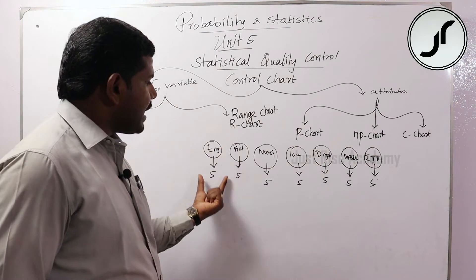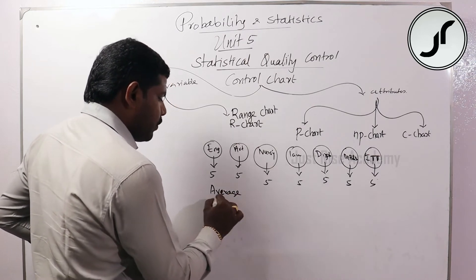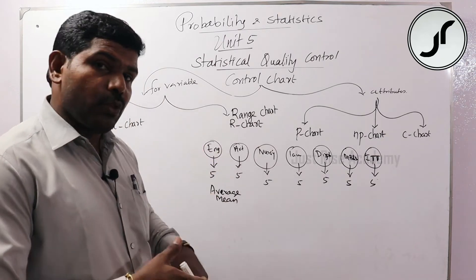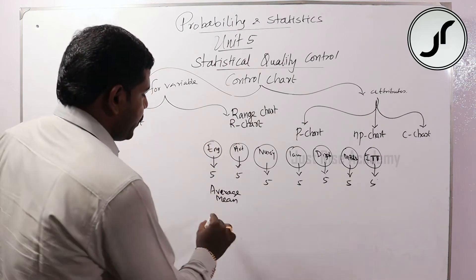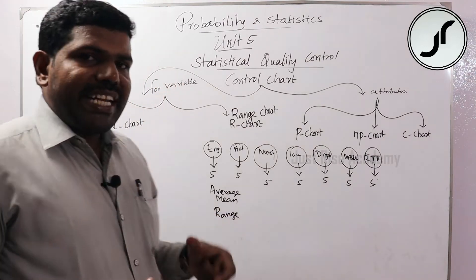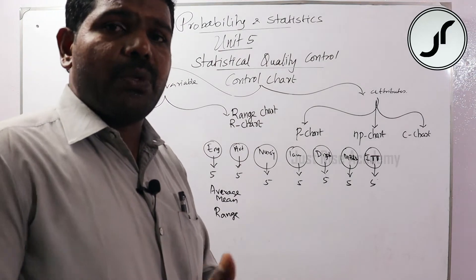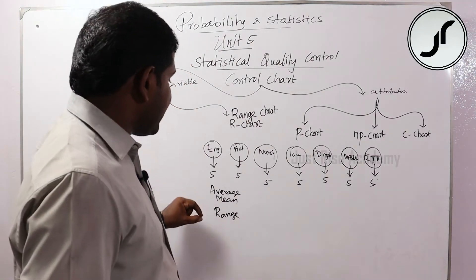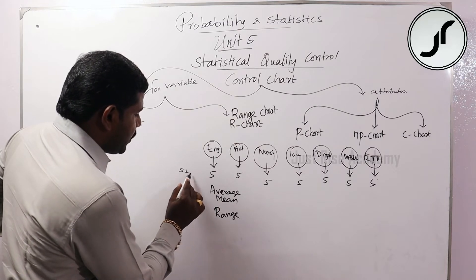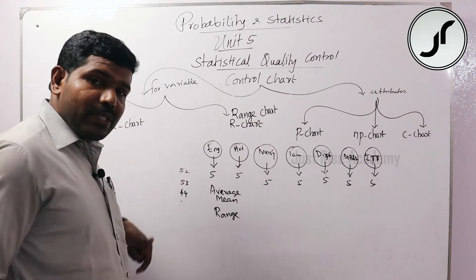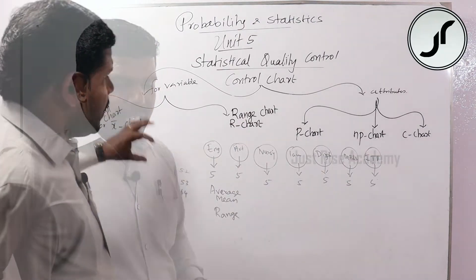The sample numbers can be 10, 11, or 12, and for each sample we calculate the mean and the range. Sometimes the data values such as 52, 53, 44 are directly given, and from that data we can find out the average as well as the range.